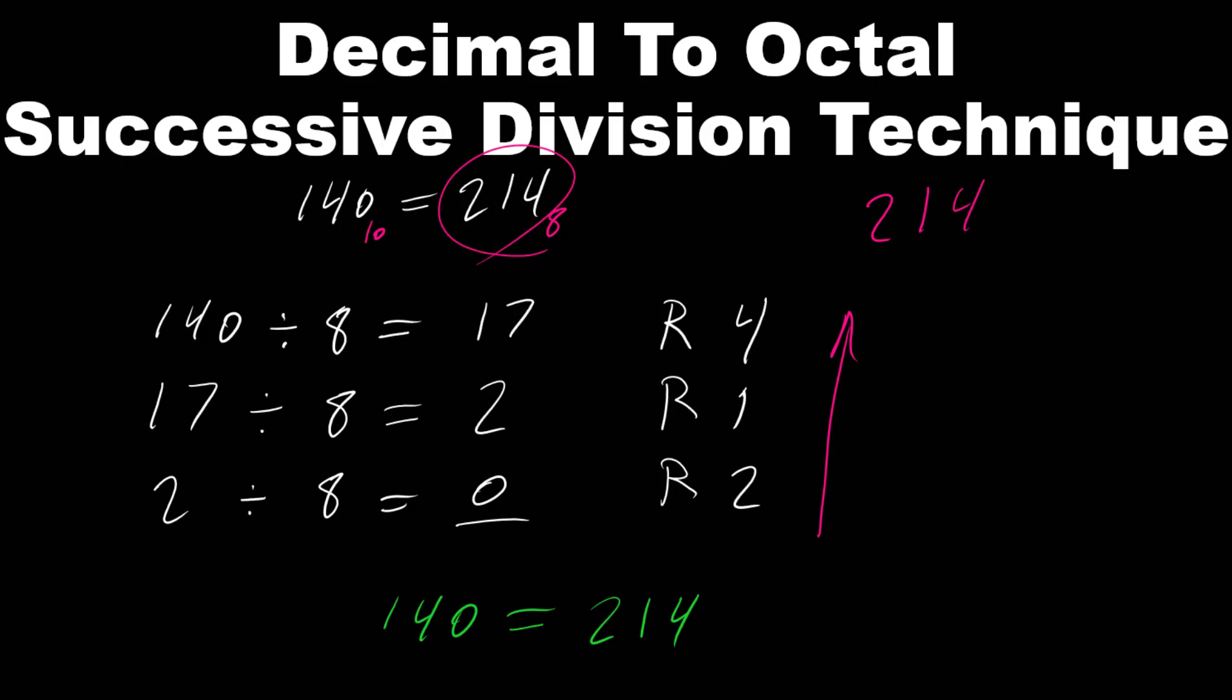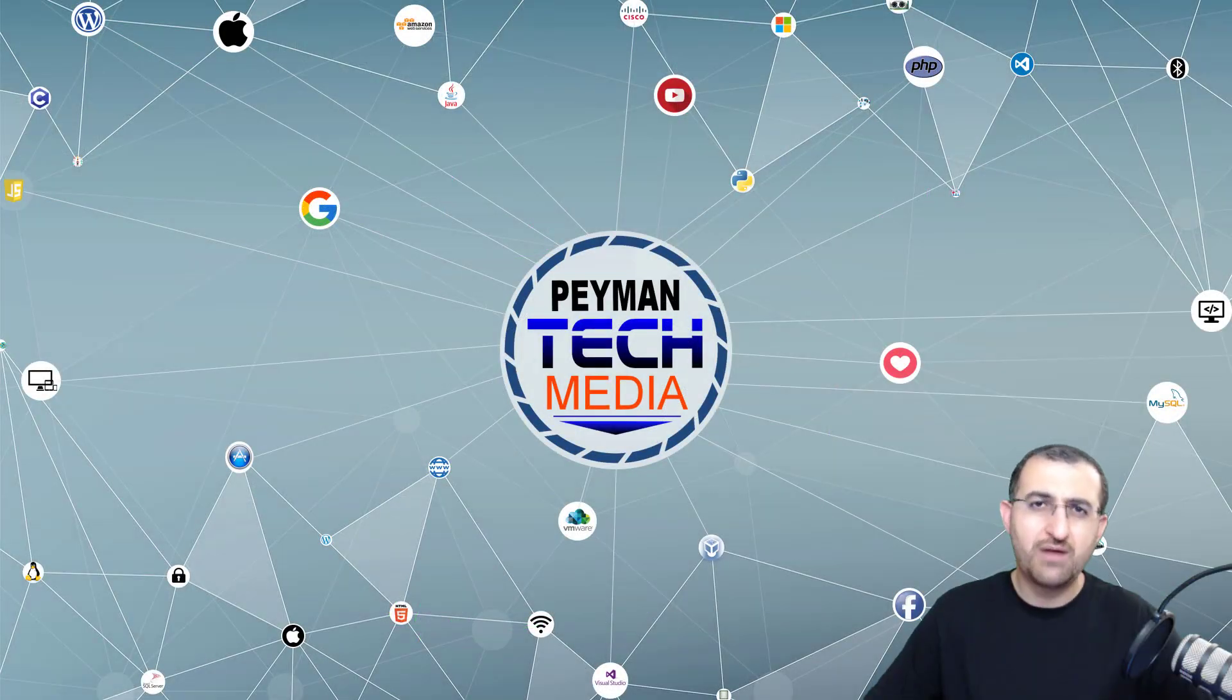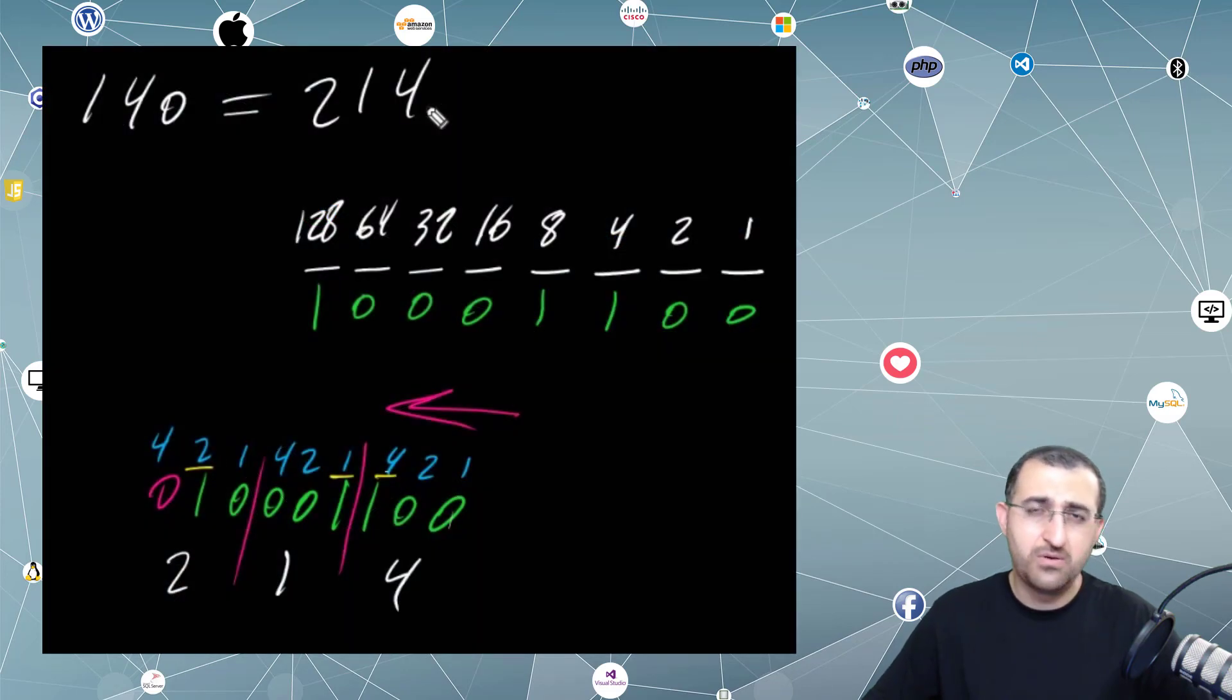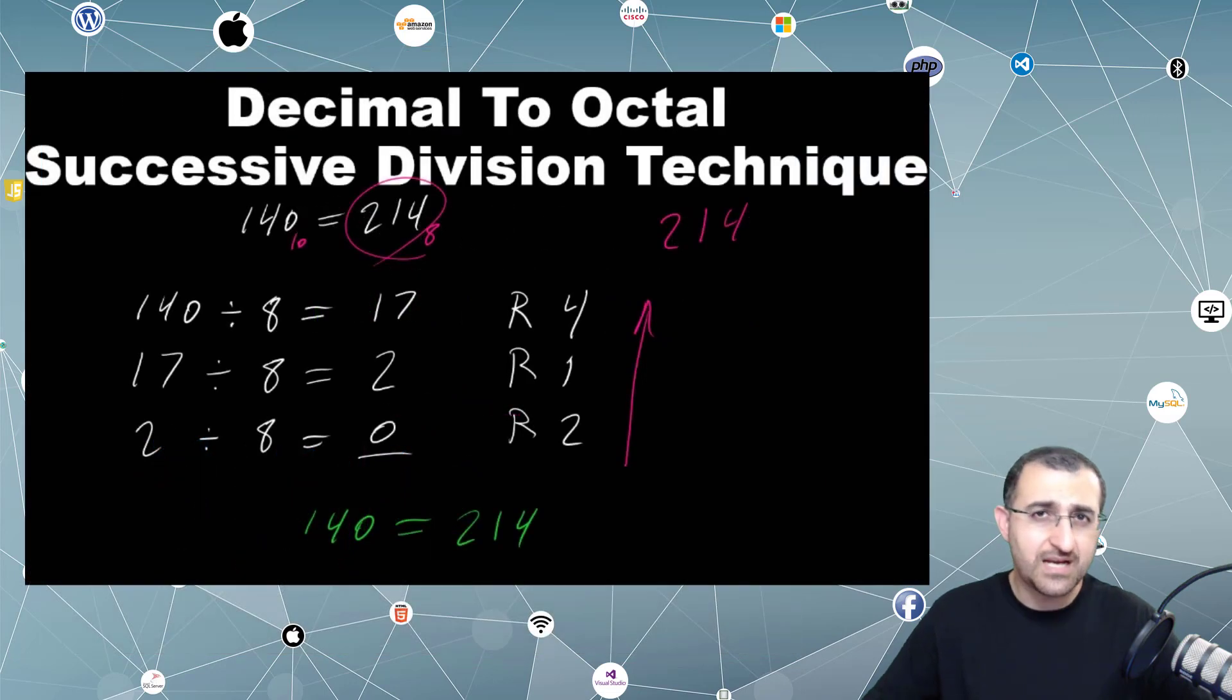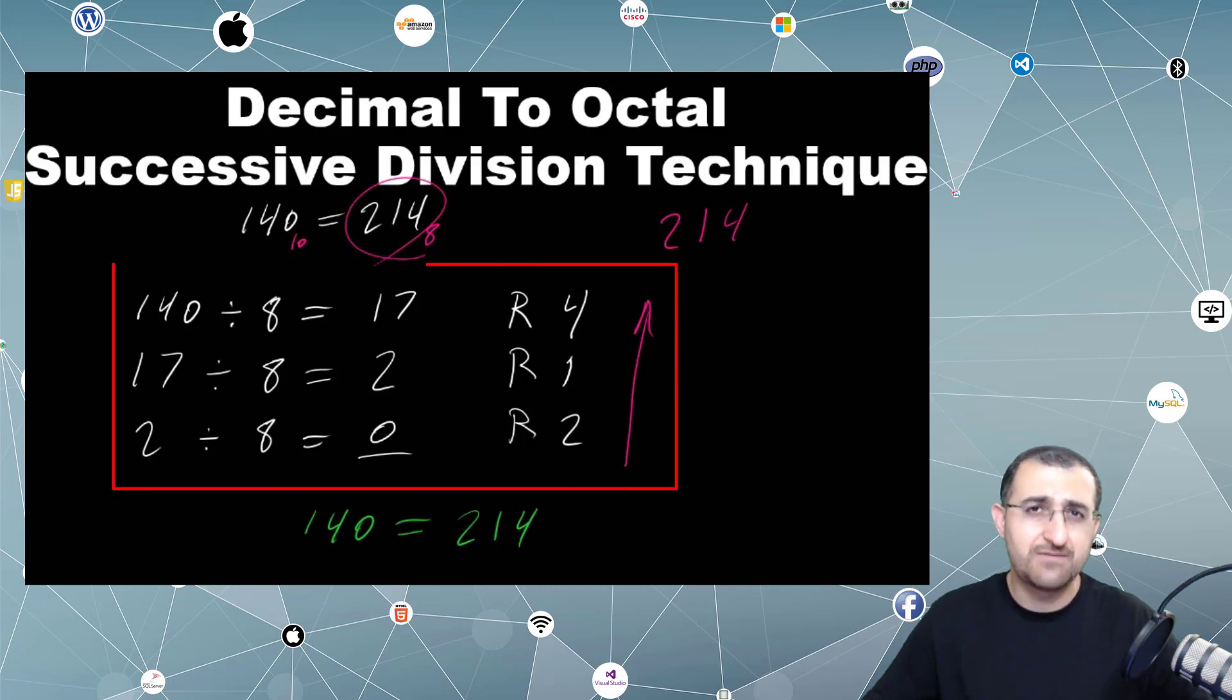This was an example of converting decimal number to octal number using successive division technique. This was a quick overview of different ways to convert decimal number to an octal number. In the first example, we used binary as a bridge, converting decimal to binary, and then from binary to octal number. And in the second example, we directly converted decimal number to an octal number using the successive division technique.